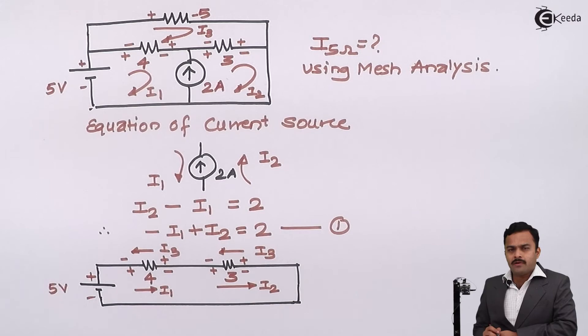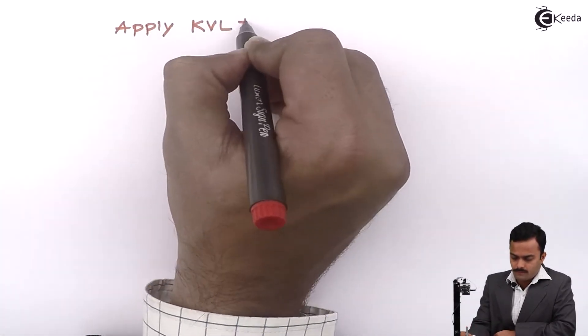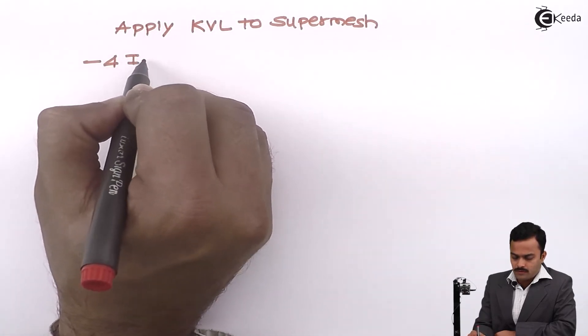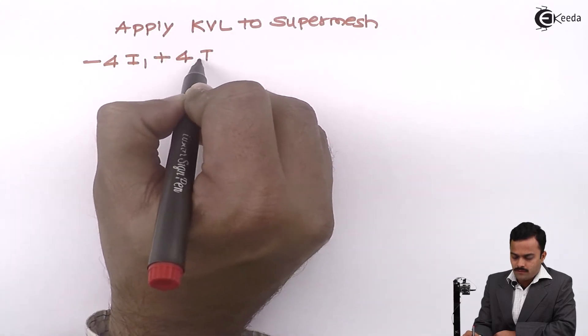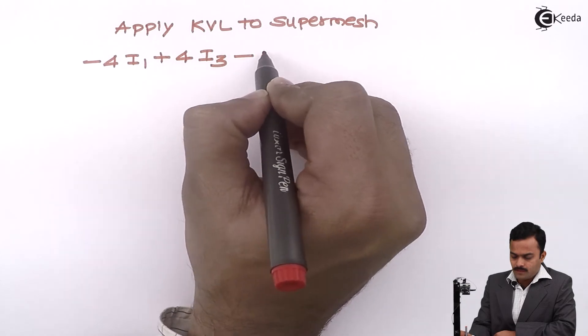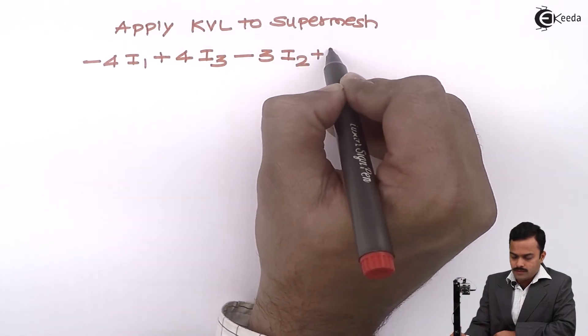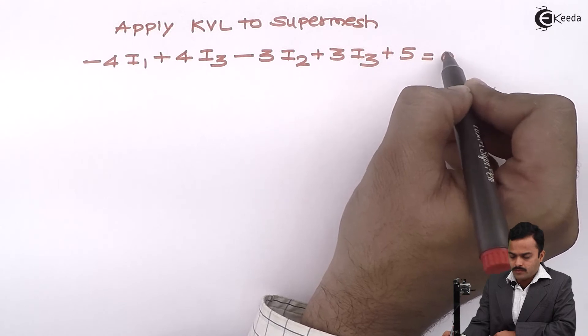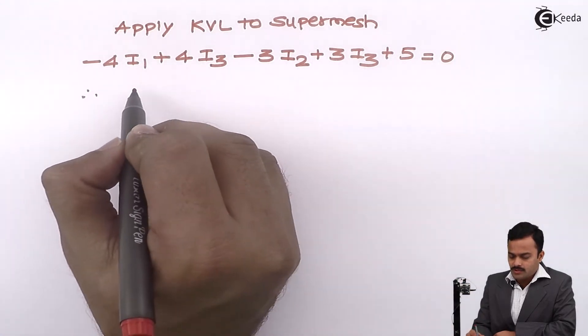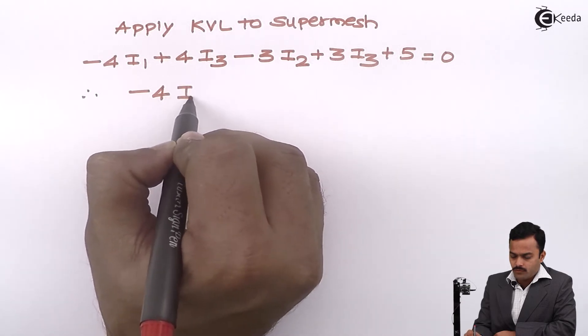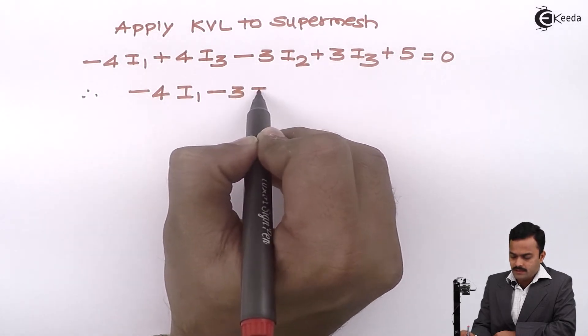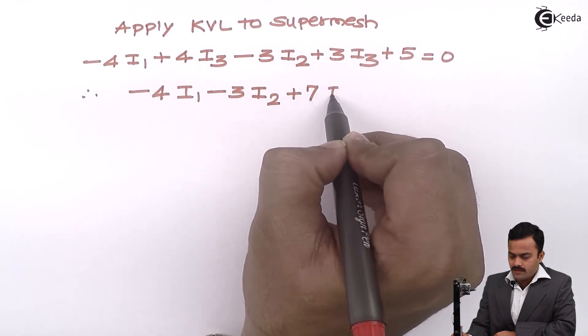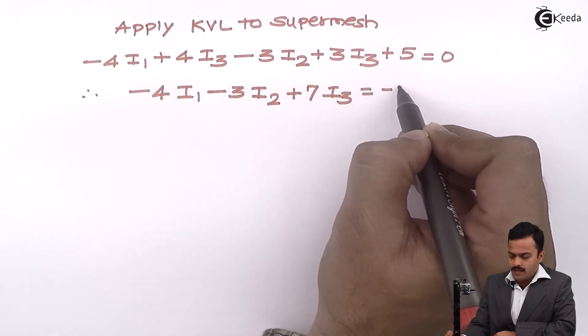So let's apply KVL to the super mesh. I will get minus 4 I1 plus 4 I3 minus 3 I2 plus 3 I3 plus 5 equal to 0. So let's simplify. After simplifying, I will get minus 4 I1 minus 3 I2, 4 and 3 will become 7, 7 I3 equal to minus 5. This is equation number 2.